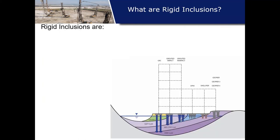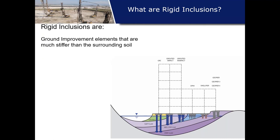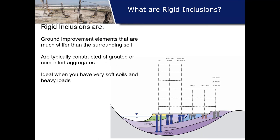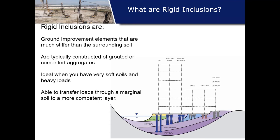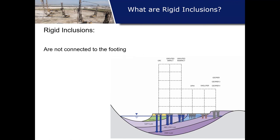What are rigid inclusions? In a general sense, they're ground improvement that is much stiffer than the surrounding soil. To achieve that stiffness, these elements are typically constructed of concrete or cemented materials, but not always. They're great when you have very soft soils and heavy loads because they're able to transfer loads through softer marginal soil layers down to a more competent layer. Importantly, rigid inclusions are not connected to the footing — that's a big difference from deep foundations.